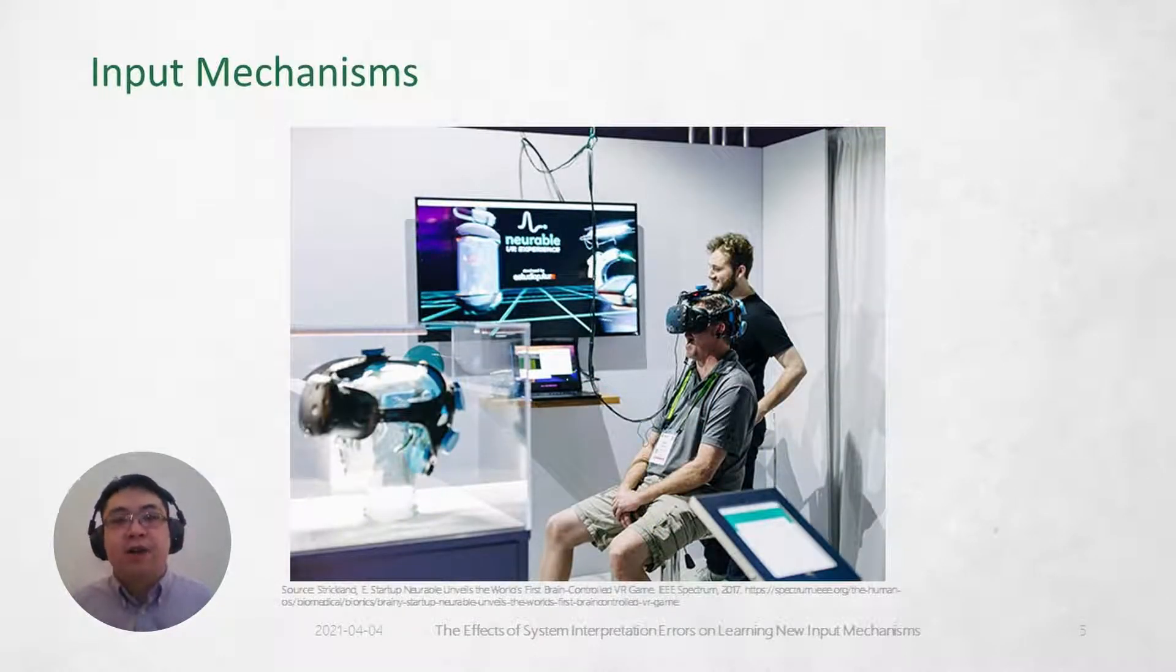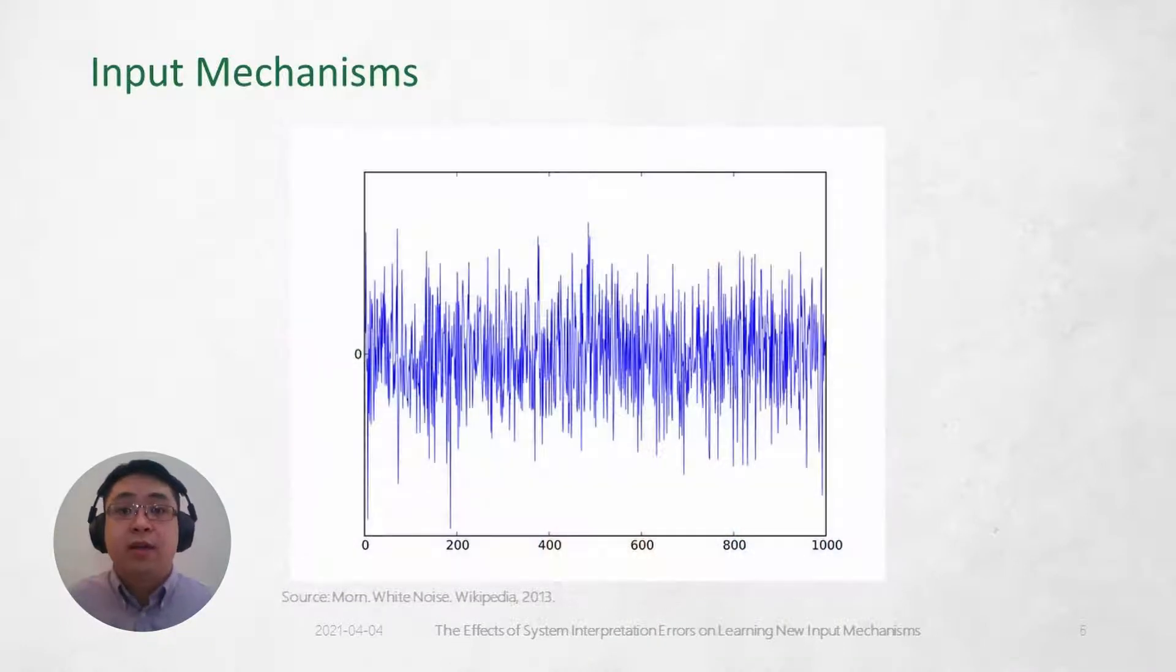However, all these input mechanisms share a similar problem when it comes to interpreting an analog signal: noise. The presence of noise can obscure useful information and make it difficult for the computer system to correctly interpret the user's intended input, which may lead to interpretation errors.